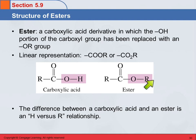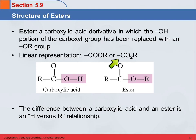It could be methyl, ethyl, something over here. So the relationship here between the carboxylic acid and the ester is an H versus R relationship, and we see that in some other compounds as well. The linear representation for these is going to be COOR — which has nothing to do with beer — or CO2R. The difference is you've got an R group instead of an H.